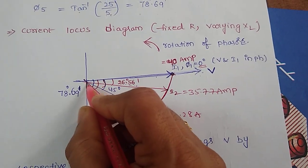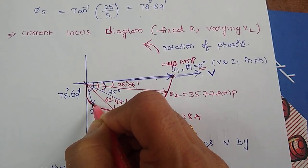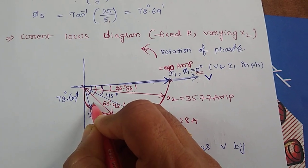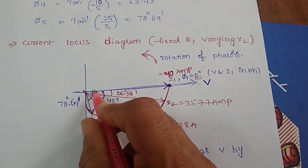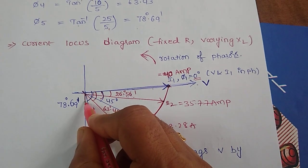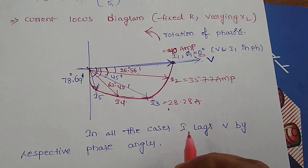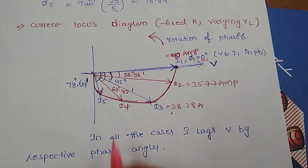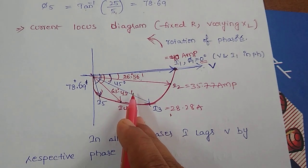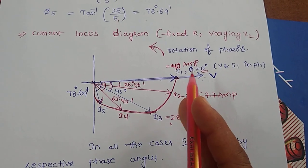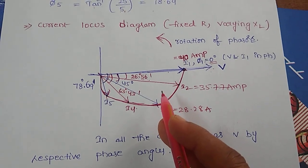So finally I am going to draw the current phasor of I5 corresponding to omega of 5000 radians per second with a phase angle of 78.69. There you can see in all the cases, I lags V by their respective phase angles. Since it is an RL series circuit, it is having inductive nature.